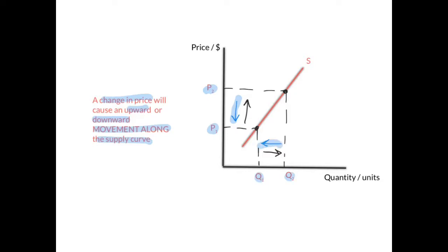And the opposite is true. If price rises from P1 to P2, this leads to an increase in quantity from Q1 to Q2. We say there's been an increase in quantity supplied. So the law of supply explains movements along the same supply curve.